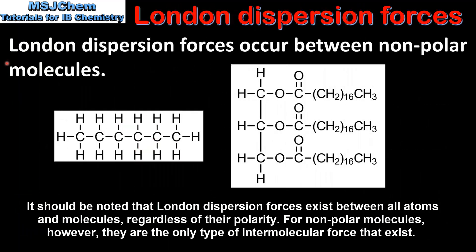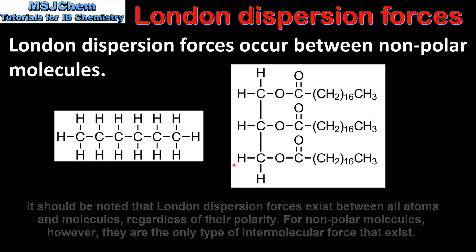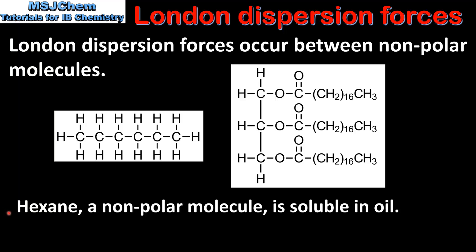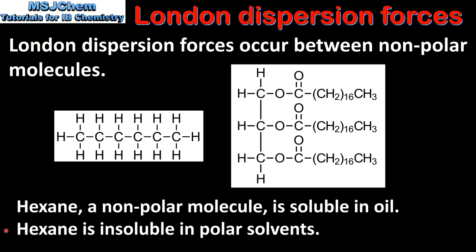The last type of intermolecular forces we'll look at are London dispersion forces. London dispersion forces occur between non-polar molecules. Here we have two examples: on the left we have hexane, and on the right we have a triglyceride. Triglycerides are also known as fats or oils. Hexane, a non-polar molecule, is soluble in oil which is also non-polar. When hexane dissolves in oil, London dispersion forces occur between hexane molecules and triglyceride molecules. However, hexane is insoluble in polar solvents such as water and alcohols.